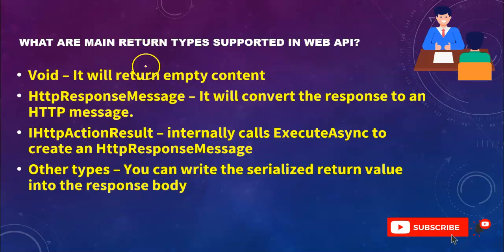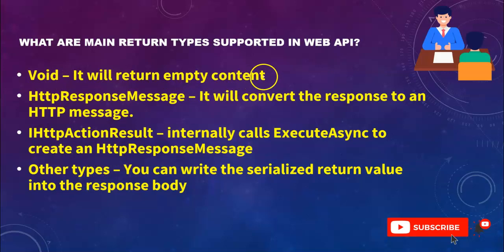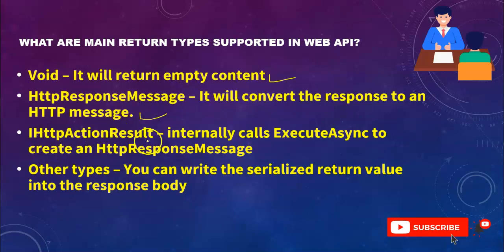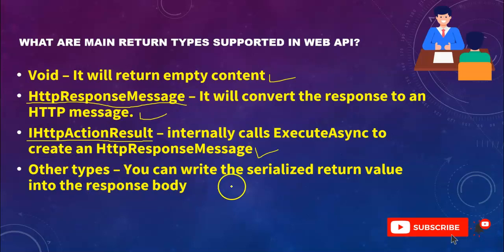What are the main return types supported by Web API? In Web API the return types are: void, HttpResponseMessage, IHttpActionResult, and other types. Void will return empty content. HttpResponseMessage will convert the response to an HTTP message so that any device can understand it. IHttpActionResult internally calls ExecuteAsync to create an HTTP response message.